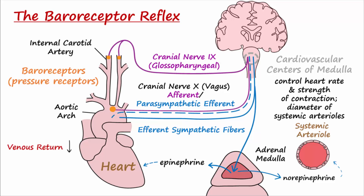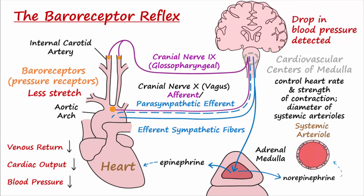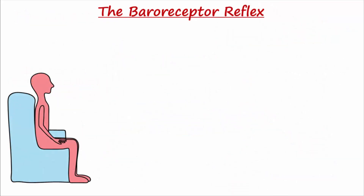Upon standing, venous return decreases, decreasing preload, so cardiac output decreases, decreasing blood pressure. This is immediately sensed by the baroreceptors as they are stretched less. The reduced stretch results in a lower frequency of action potentials being transmitted to the cardiovascular centers, which is interpreted as a drop in blood pressure. The cardiovascular centers respond by decreasing parasympathetic activity and increasing sympathetic activity, resulting in increased heart rate, increased force of contraction, and vasoconstriction, which restores blood flow to the brain. The reflex can respond within about two heartbeats of the change.